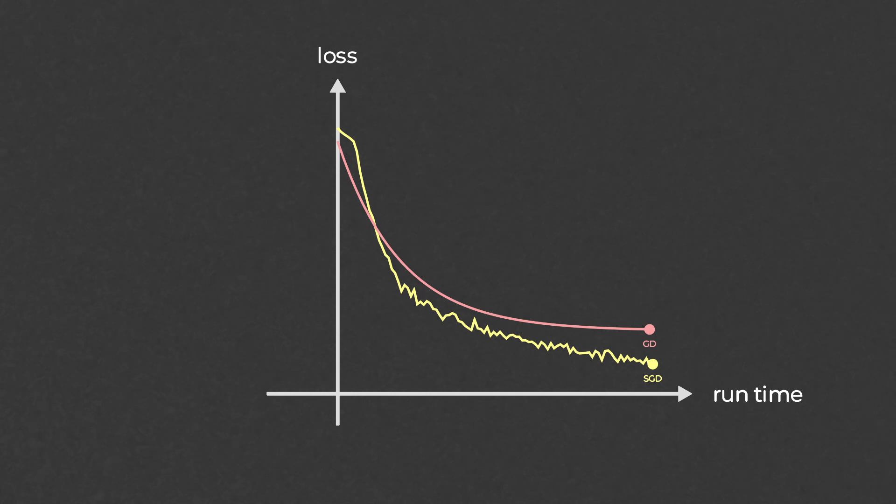What is surprising is that in practice, Stochastic Gradient Descent not only catches up with the vanilla gradient descent, but it often finds better solutions. And this should come off as a complete surprise, if anything using an inaccurate method should lead to suboptimal solutions.